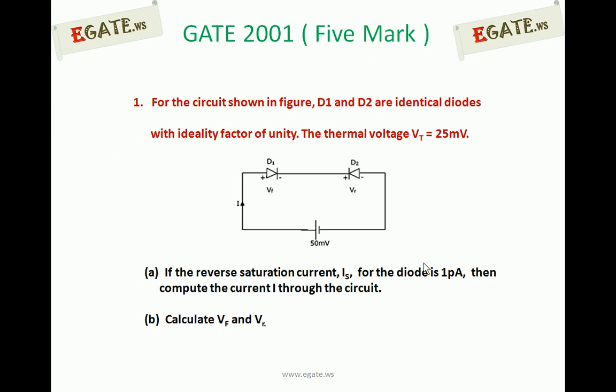If the reverse saturation current for the diode is 1 pA, then compute the current I flowing through the circuit. Calculate Vf and Vr. This Vf and Vr are also indicated on the diagram. Vf is voltage across Diode 1, Vr is voltage across Diode 2 with indicated polarities.